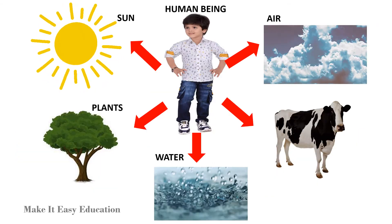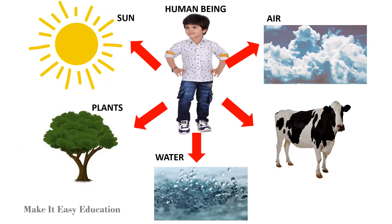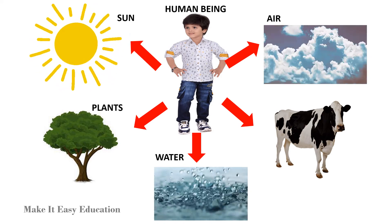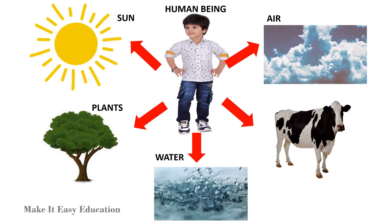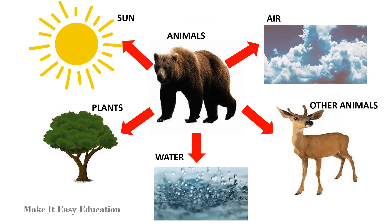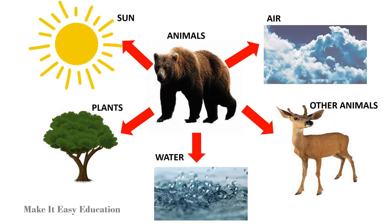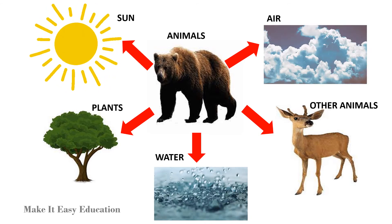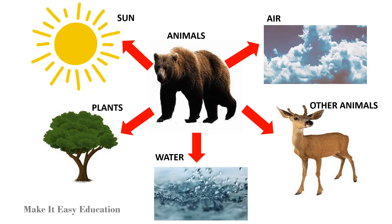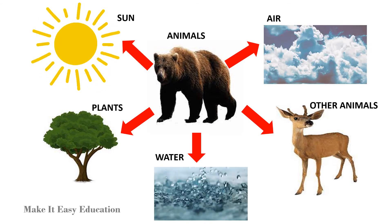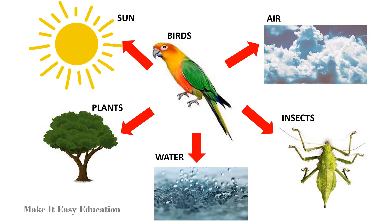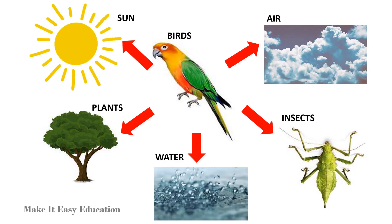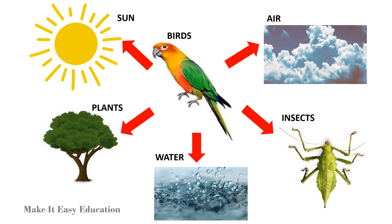Human beings depend upon air, water, sunlight, plants, and animals for their living. Animals depend upon air, water, sunlight, plants, and other animals for their living. Birds depend upon air, water, sunlight, plants, and insects for their living.